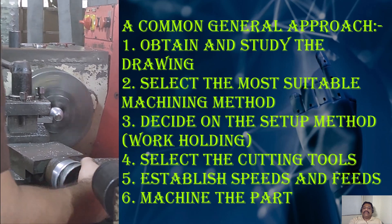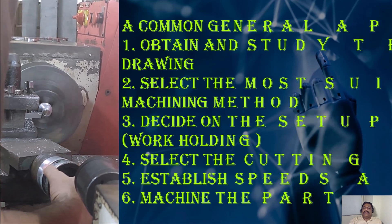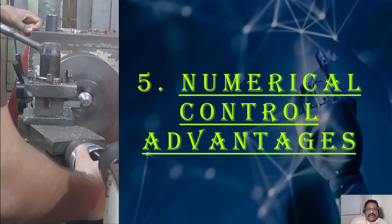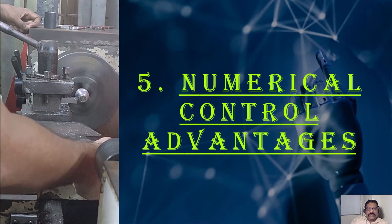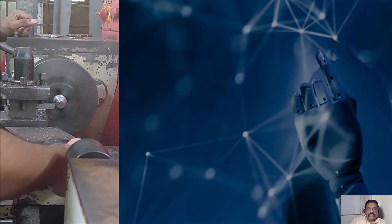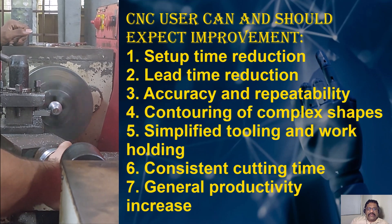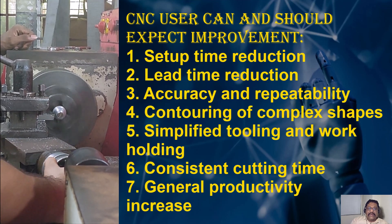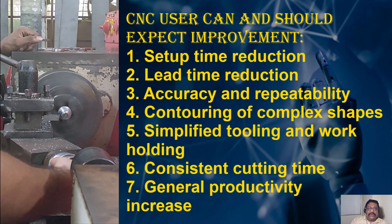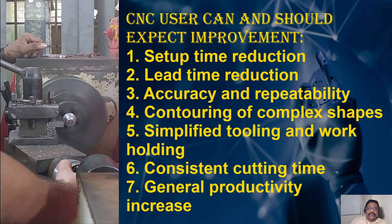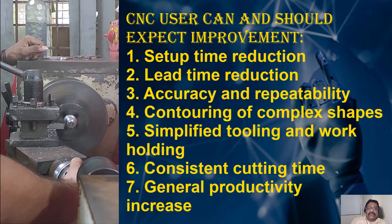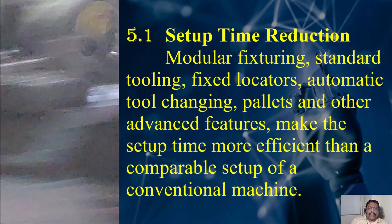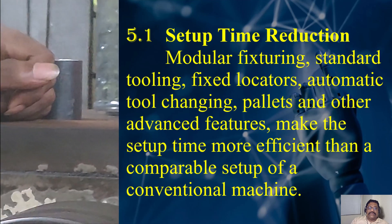CNC machine consideration should also be given to part complexity, its tolerance, and the required quality of surface finish. The main advantages of numerical control include: setup time reduction, lead time reduction, accuracy and repeatability, complex shapes, simplified tooling, work holding, consistent cutting time, and general productivity increases.